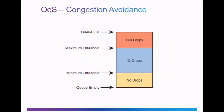The main mechanism of congestion avoidance in QoS on Cisco routers and switches is Weighted Random Early Detection, or WRED. With WRED, a percentage of the packets are dropped once the queue exceeds the minimum threshold. If the queue has gone over the maximum threshold, then packets are automatically dropped.